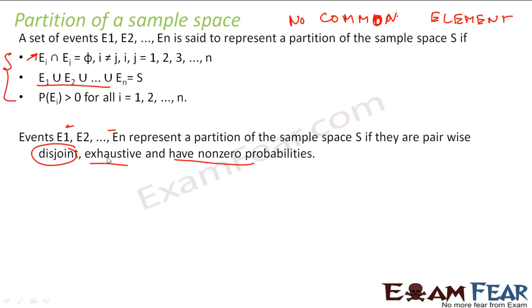Let me repeat once again. They are pairwise disjoint because if you take any two pairs, they do not have any common element. They are exhaustive — if you take the union of all of them, you get the sample space. And they all have non-zero probabilities.